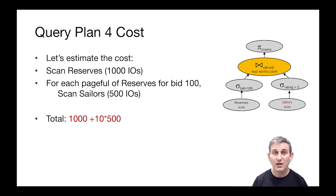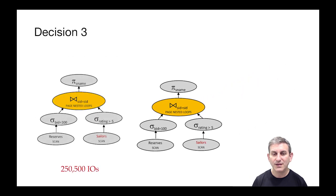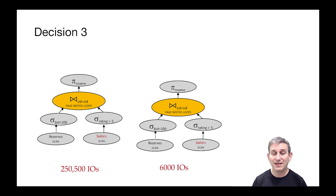How many pagefuls of Reserves match boat ID 100? We said there were 100 boats and reservations were equally distributed across boats, so we would expect one out of 100 Reserve tuples to be for boat ID 100. If Reserves is a thousand pages, then one-hundredth of Reserves is 10 pages. The total cost here is a thousand to scan Reserves and then 10 times scanning Sailors, which is 500. Overall cost: 6,000 IOs. This is an enormous savings just by changing the join order by exploiting commutativity.